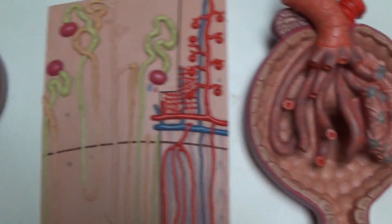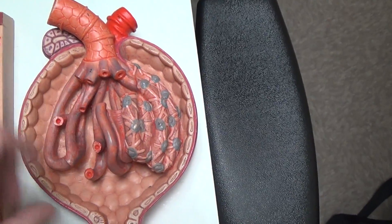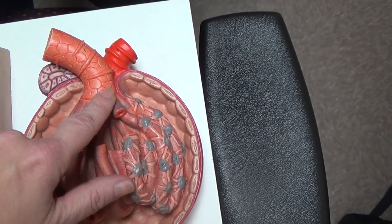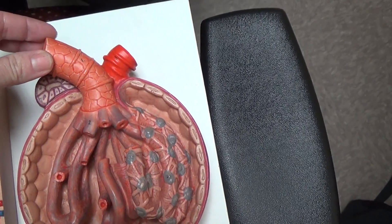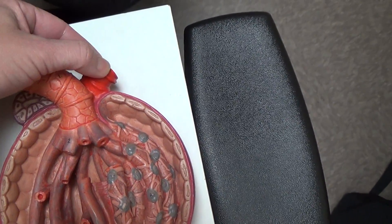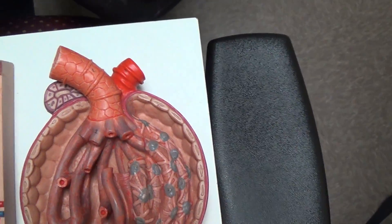Moving on to the nephron over here. This is our afferent arterial. It will have a larger diameter than the smaller blood vessel leaving it, which is called the efferent arterial.